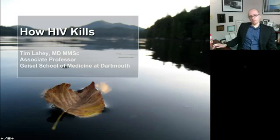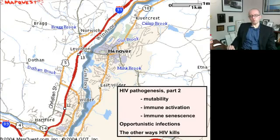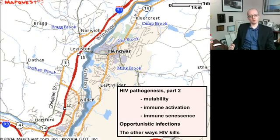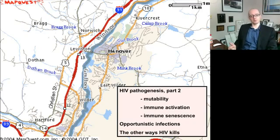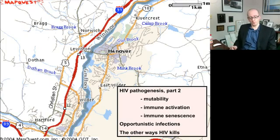Hi, I'm Tim Leahy and today we're going to talk about how HIV kills. We're going to talk about HIV pathogenesis and revisit some of the major concepts there. Then we're going to go to what that leads to: what are opportunistic infections? And we know now that infections are not the only way that HIV kills people, so what are those other ways?